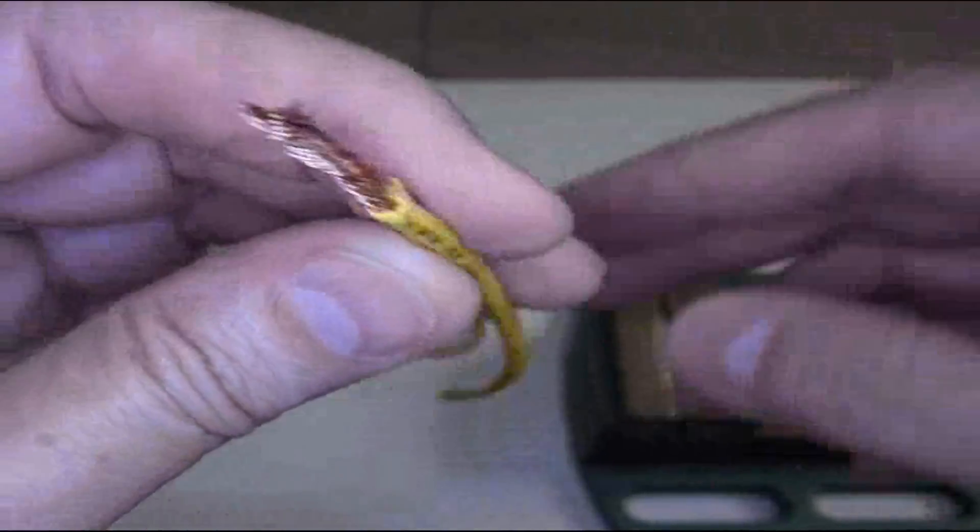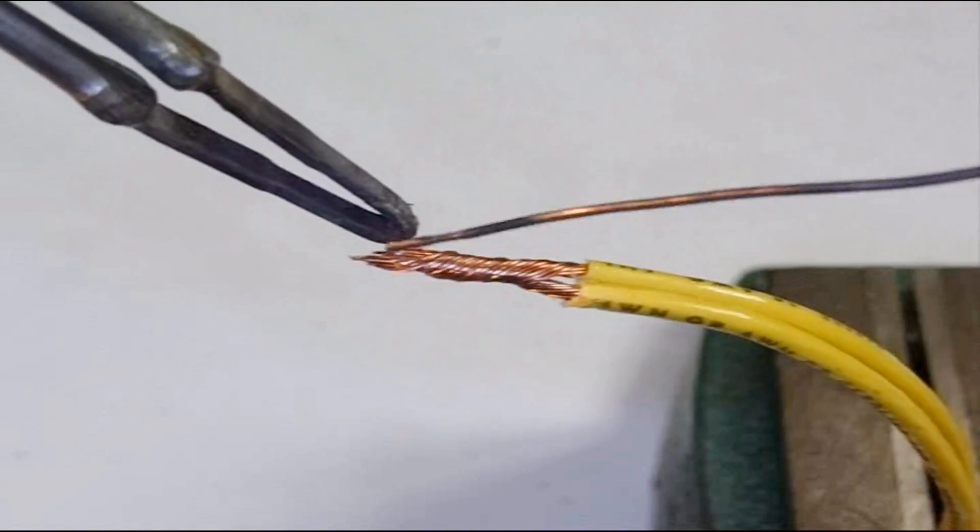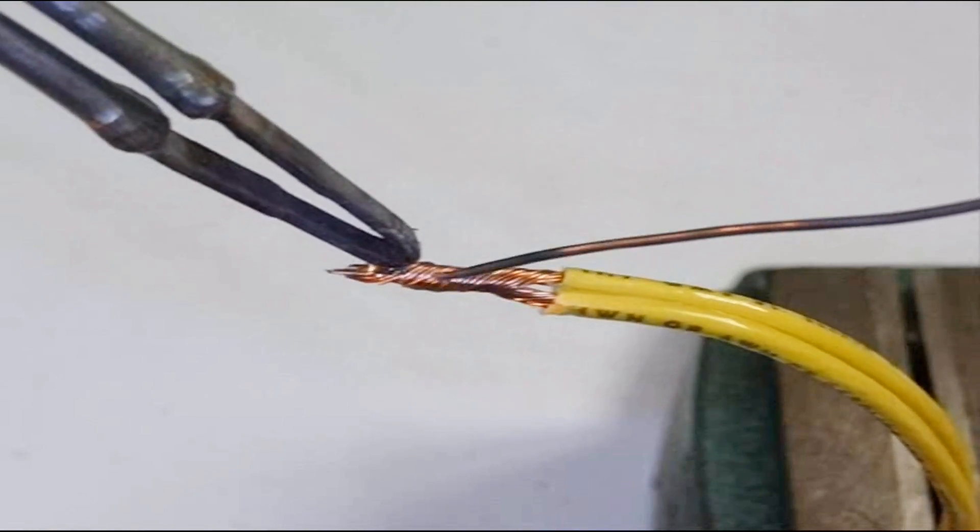Let me mount it and solder it. When I'm doing joints I prefer to start away from the insulation and then move towards it.